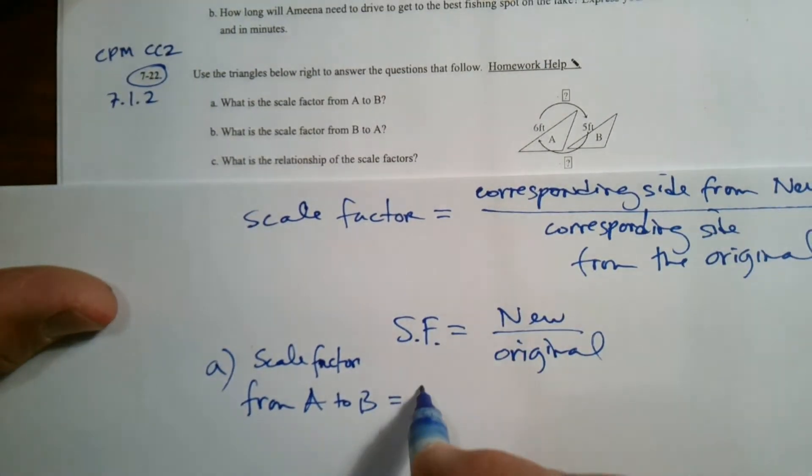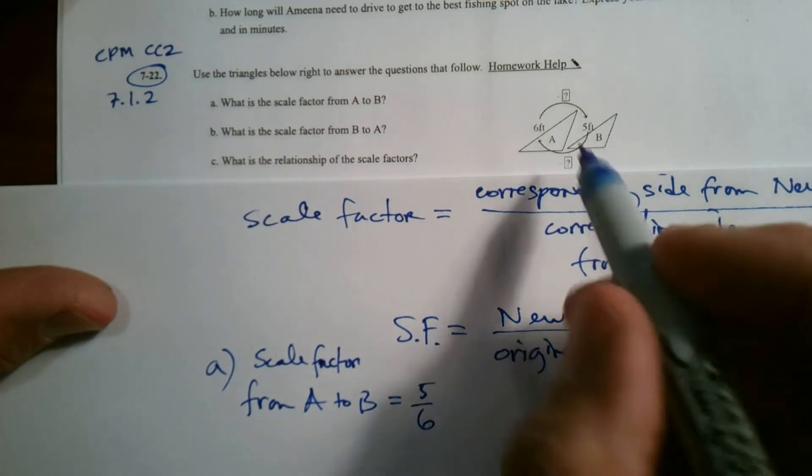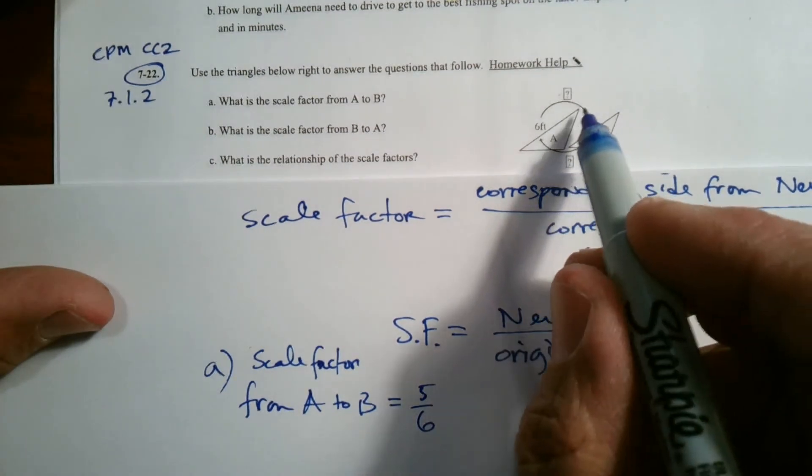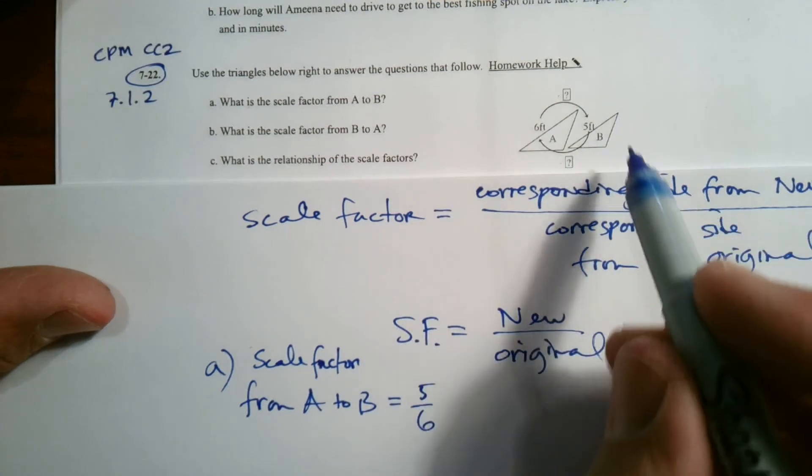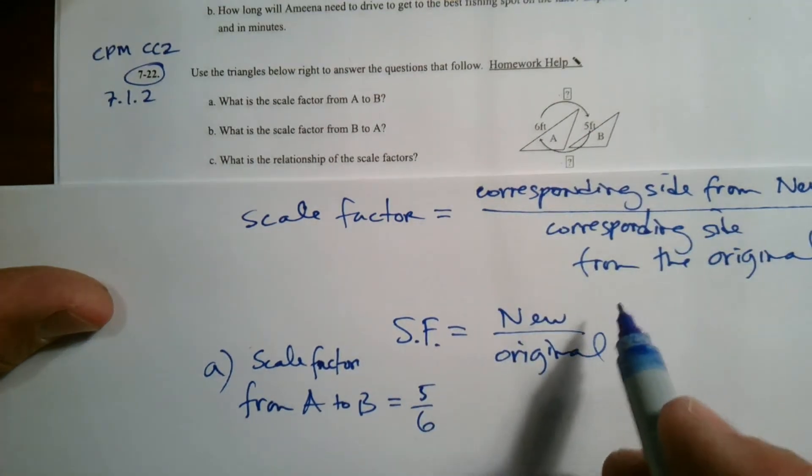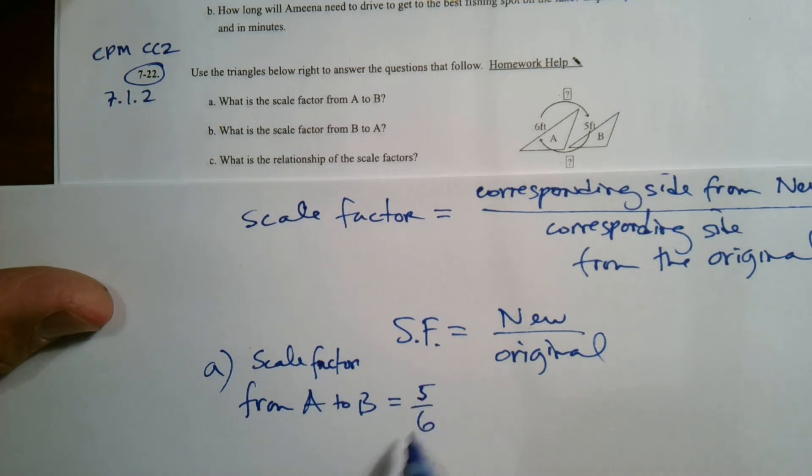That length, five over six. So from A to B is taking the new, which is the B, over the A. And it's going to be the number that's smaller than one.